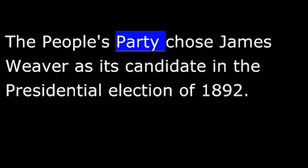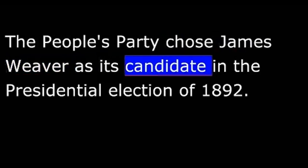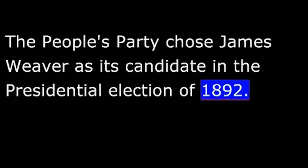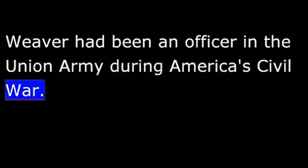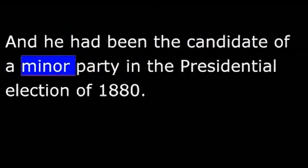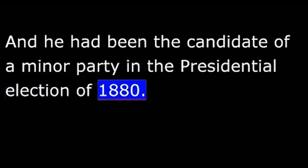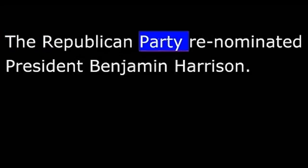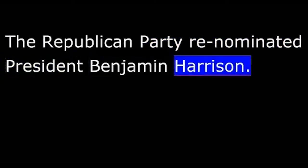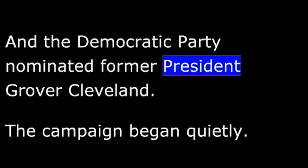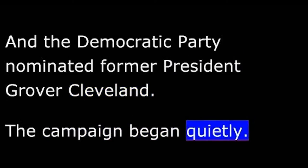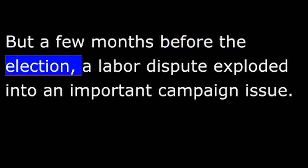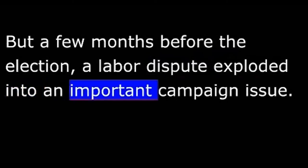The People's Party chose James Weaver as its candidate in the presidential election of 1892. Weaver had been an officer in the Union Army during America's Civil War. He had served in the House of Representatives and had been the candidate of a minor party in the presidential election of 1880. The Republican Party re-nominated President Benjamin Harrison. And the Democratic Party nominated former President Grover Cleveland. The campaign began quietly, but a few months before the election, a labor dispute exploded into an important campaign issue.